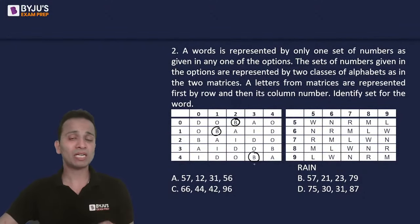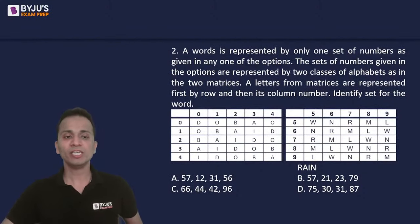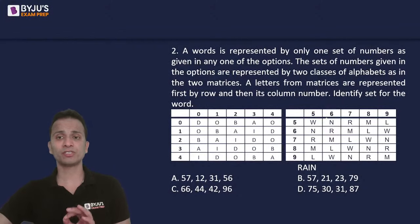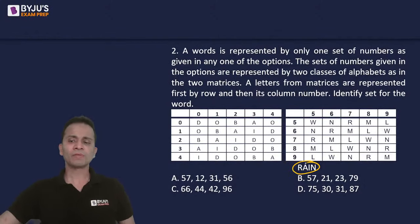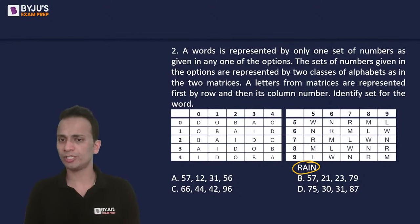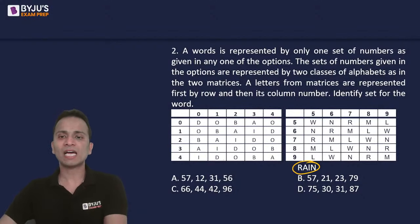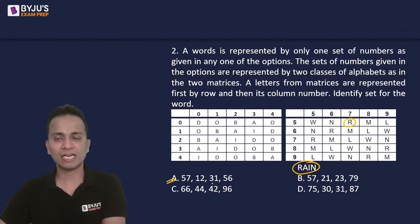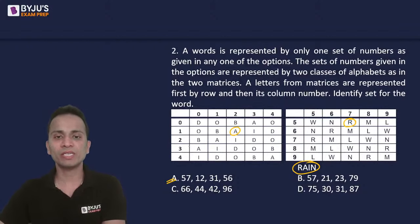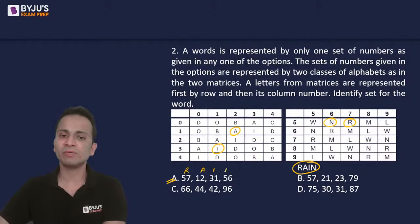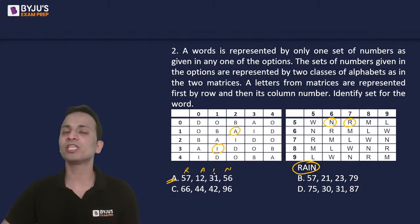We have to find out the set of codes for the given word RAIN. The best way of doing this type of question is going through the options. For option A: 57 is R — correct; 12 is A — correct; 31 is I — correct; 56 is N — correct. So definitely this set of numbers represents RAIN, and option A is the correct answer. In any case, you will have to go through options in such questions — this is the fastest way to get the answer.